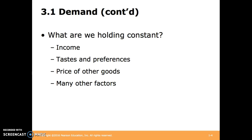When we say ceteris paribus, or all things equal, we mean all things being held constant. Some of the more important things to consider being constant are things like income, tastes and preferences, and prices of other goods.